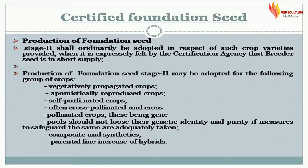Production of Foundation Seed Stage II shall ordinarily be adopted in respect of such crop varieties when it is expressly felt by the certification agency that Breeder Seed is in short supply. Production of Foundation Seed Stage II may be adopted for the following groups of crops: vegetatively propagated crops, apomictically reproduced crops, self-pollinated crops, often cross-pollinated and cross-pollinated crops where gene pools should not lose their genetic identity and purity if measures to safeguard the same are adequately taken, composites and synthetics, and parental line increase of hybrids.